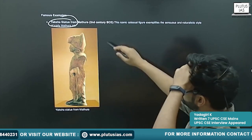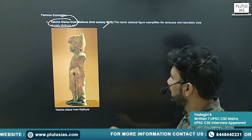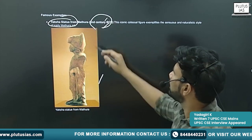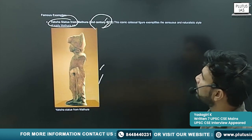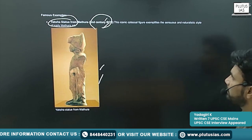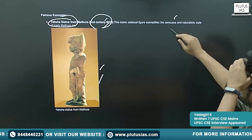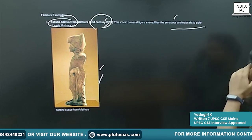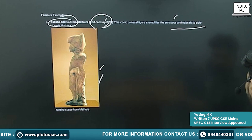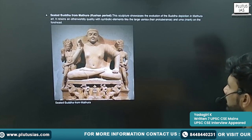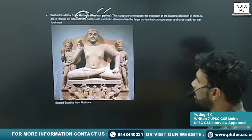Famous examples: the Yaksha statue from Mathura — carved around the 2nd century BC. This is the figurine of a Yaksha. It exemplifies the sensuous and naturalistic style of the Mathura School of Art.